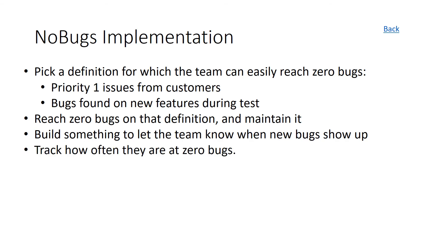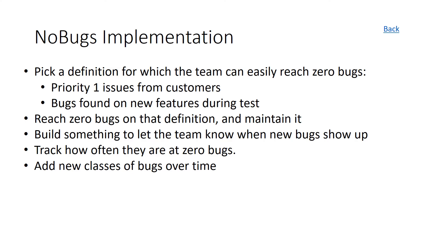Then we want to track how often the team is at zero bugs. In any sort of retrospective or summary, I would track how many times we left zero bugs and the percentage of time we were at zero bugs as an ongoing metric. Once the team has gotten good at this for the easy-to-maintain definition, we start adding new classes of bugs over time, expanding our area of goodness where we're at no bugs.